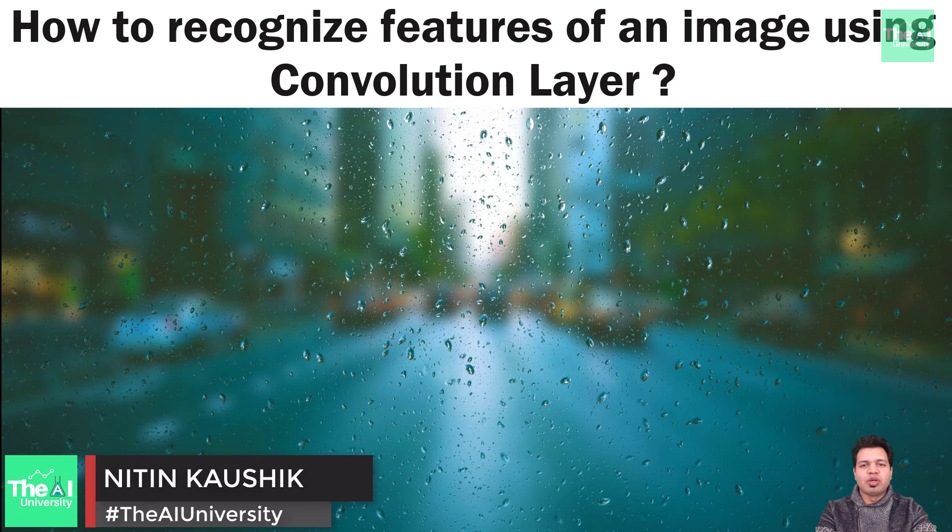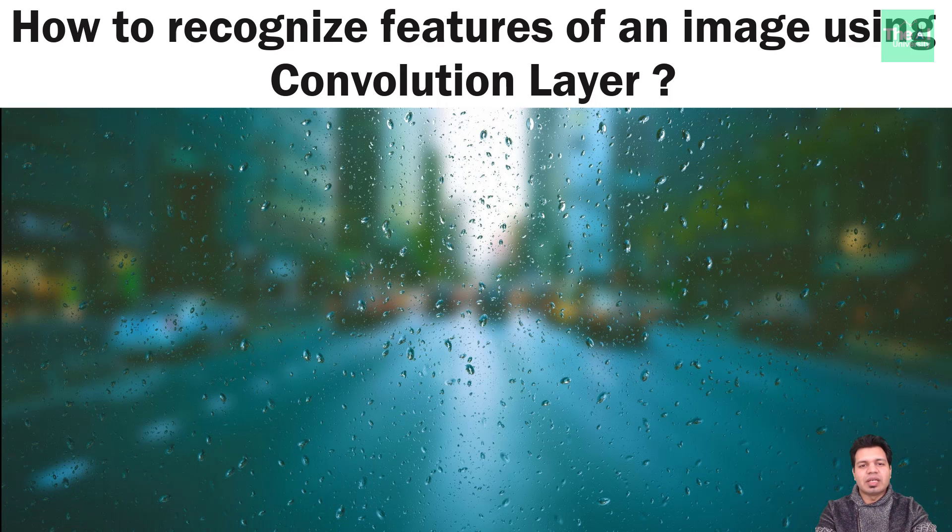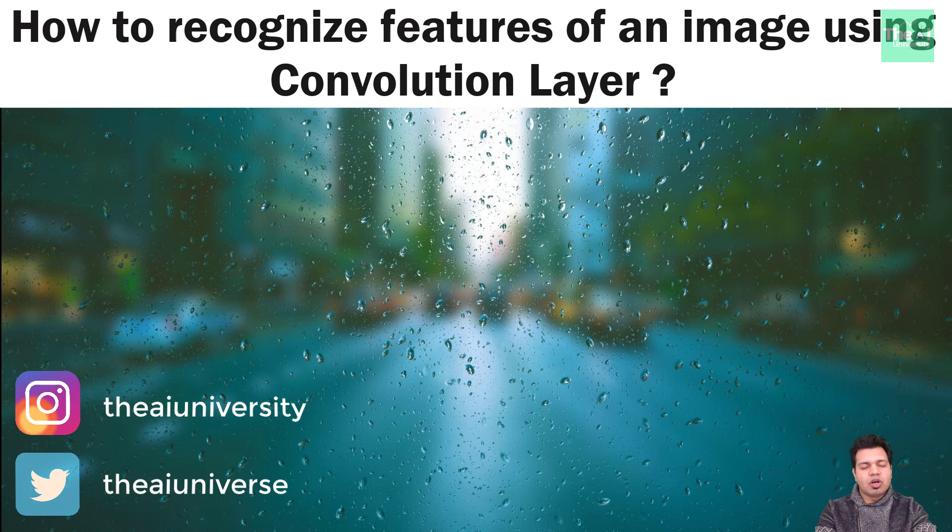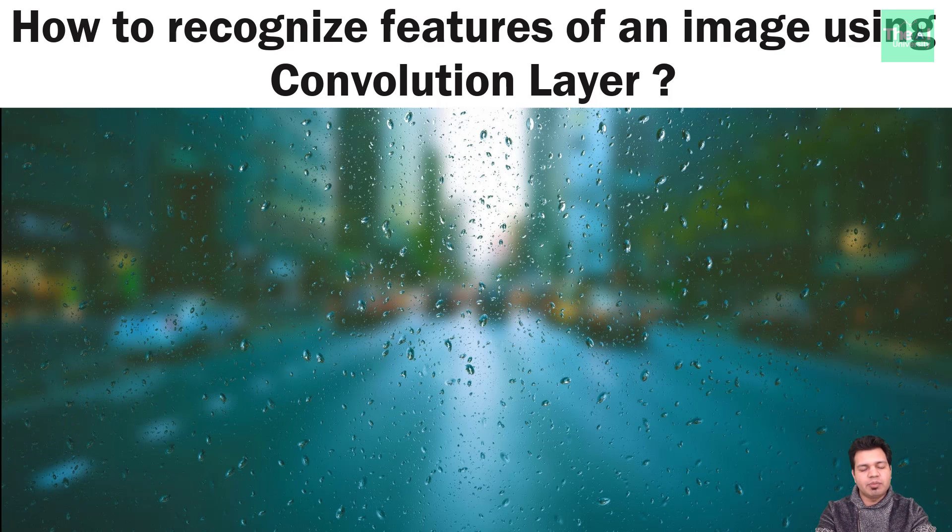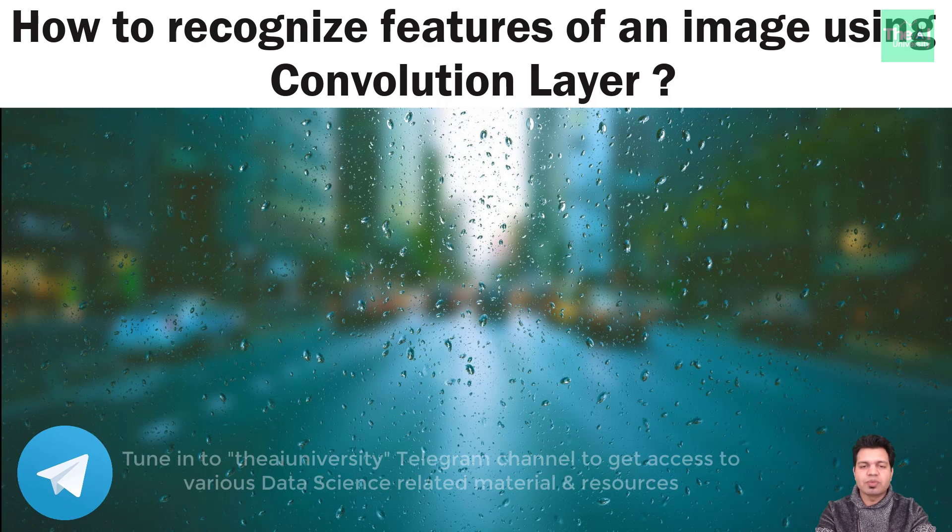In this video, I am going to explain convolution layer. In order to recognize various features of an image or a video frame, convolution neural network or CNN makes use of various layers. Convolution layer is one of the several layers used in the process of identifying features of an image.